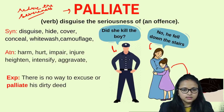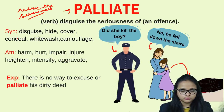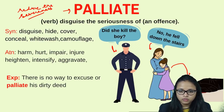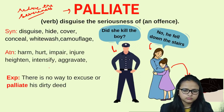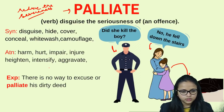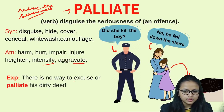Synonyms of palliate: disguise, hide, cover, camouflage, whitewash. Antonyms: harm, intensify, aggravate. Example: You come home drunk and your mother tries to calm your father down and gives you lemon water or coffee to hide that you're drunk — that is palliate, hiding someone's mistakes. Another example: 'There is no way to excuse or palliate his dirty deed.'